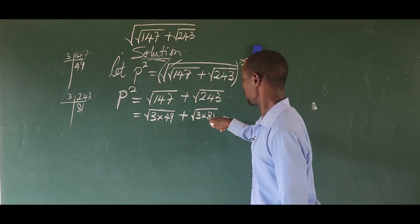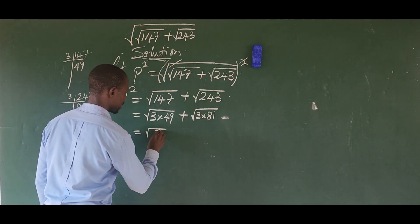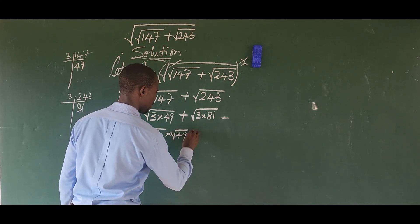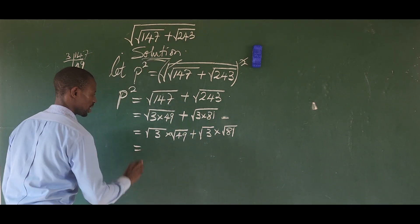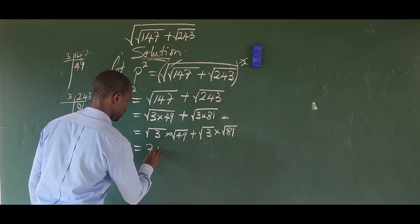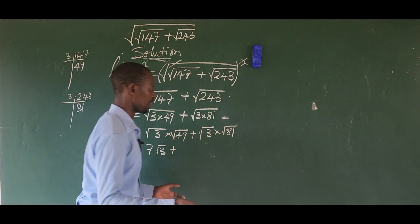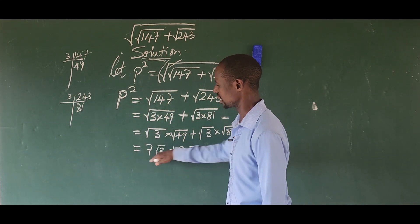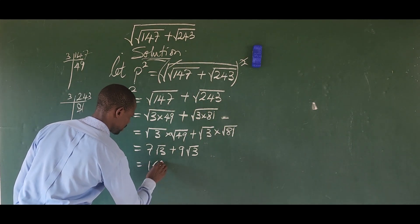Now 49 and 81 are perfect squares. Rewriting, we have: the square root of 3 times the square root of 49, plus the square root of 3 times the square root of 81. The square root of 49 is 7, and the square root of 81 is 9. So we get 7 root 3 plus 9 root 3. Since both terms have root 3, we add them together to get 16 root 3.